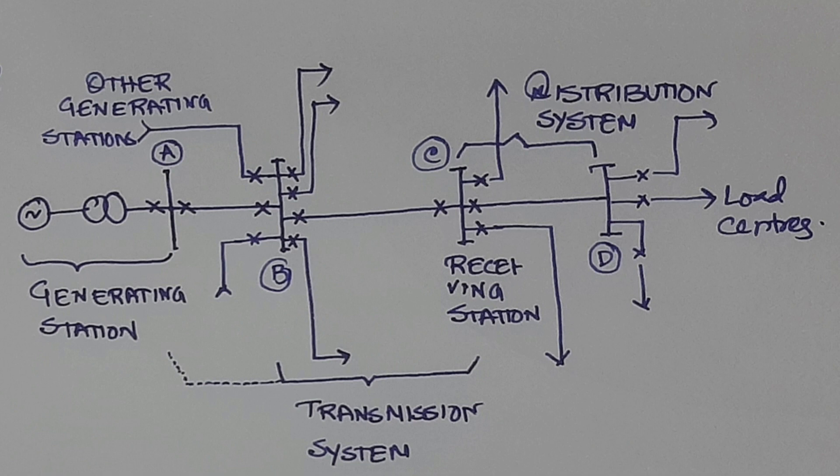At point A we will call it as a generating substation where the power generated is stepped up and sent. B you can call it as a transmission substation or grid substation because it is interconnecting all the generating stations.